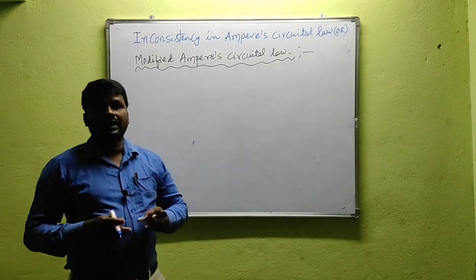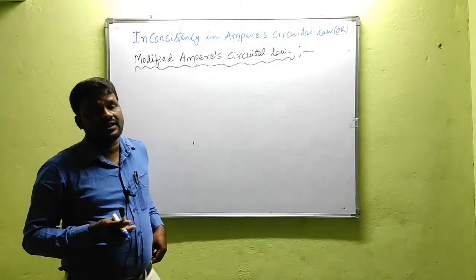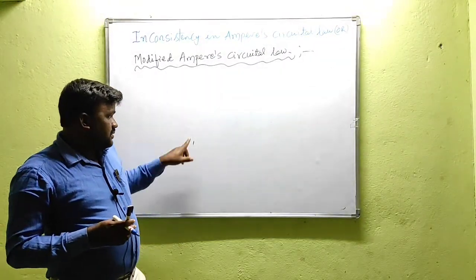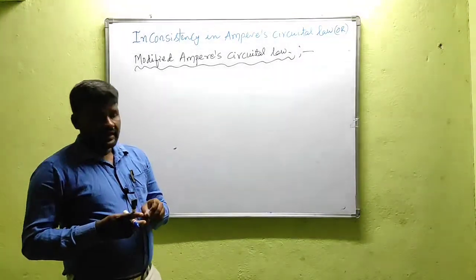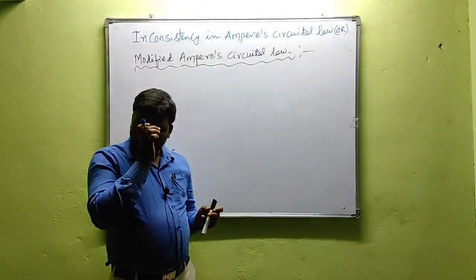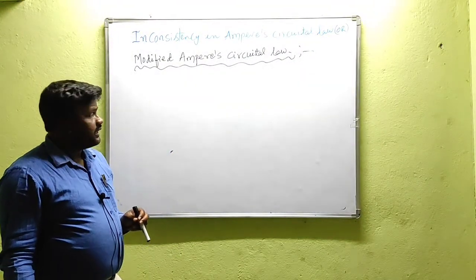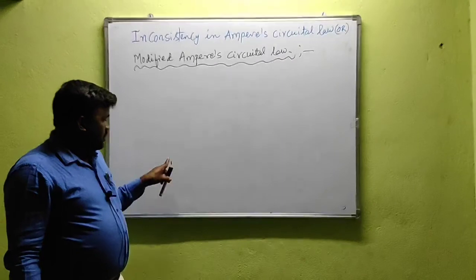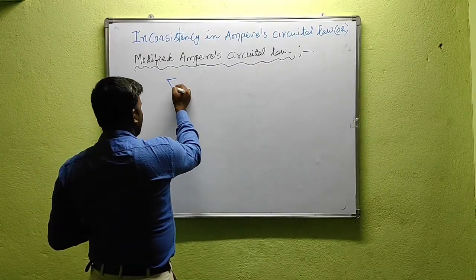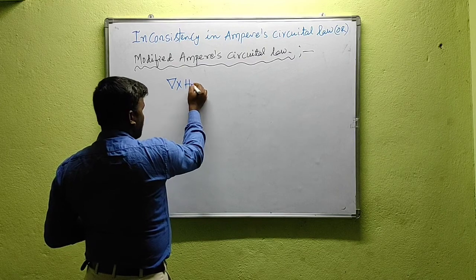Hi, welcome to our Electromagnetic Theory course. In last class, we discussed about Ampere's Circuit Law. What is Ampere's Circuit Law? The line integral of magnetic field intensity around a closed path is equal to the current enclosed by that path. From that, we derived del cross H equal to J.